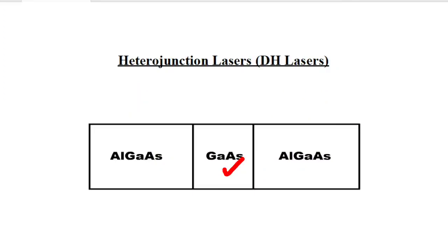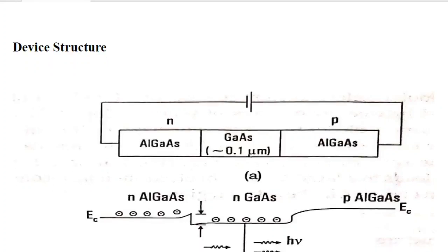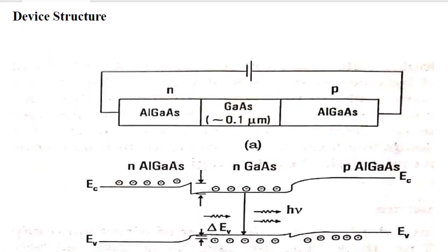The GaAs layer acts as the active region because all the electrons are trapped in it. GaAs (gallium arsenide) is a direct bandgap semiconductor. This confinement is called carrier confinement at the GaAs layer, and it leads to a large number of electron-hole recombinations and emission of photons in this active region.